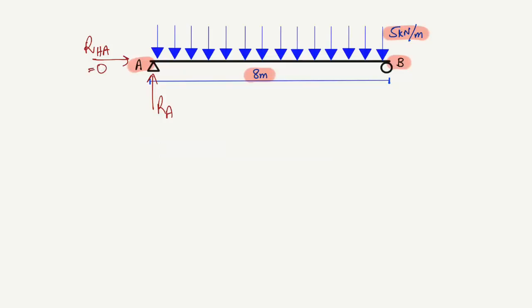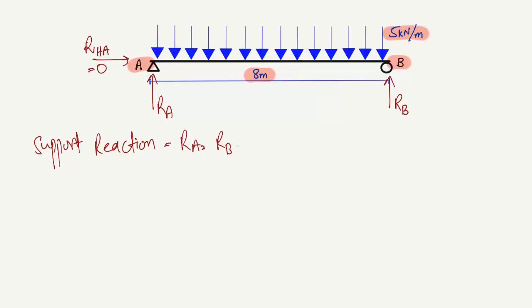At B we have a roller support, which can take the vertical load RB. So we have to find out the support reactions RA and RB. Let me show you a very easy method to find these support reactions in just one or two steps.